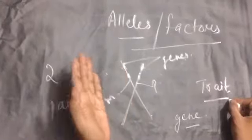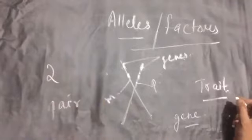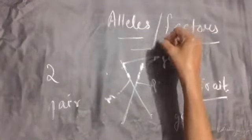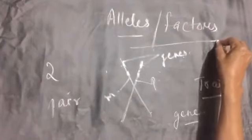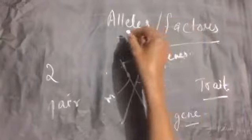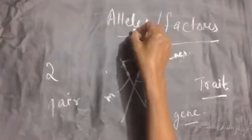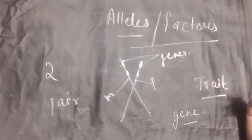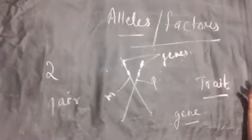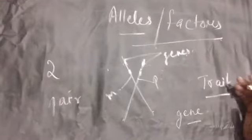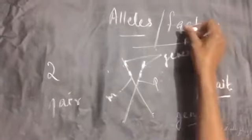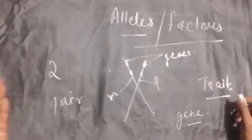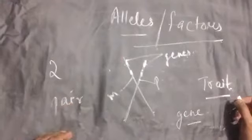According to Father Mendel, he used the term factors. Now we call them alleles. Whenever you explain Mendel's experiment, you have to use the term factor instead of alleles. Now we understand what an allele is.